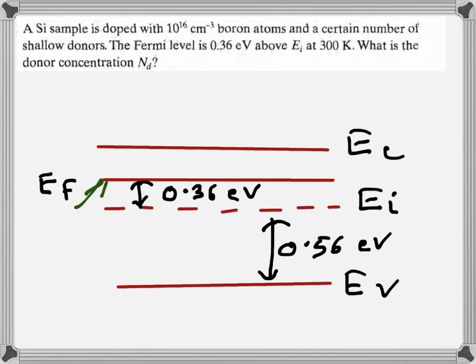Since the Fermi level is above the mid band gap or the intrinsic Fermi level, it means that it is an n-type device and the temperature is at 300 Kelvin. So we need to find the donor concentration. We can assume full ionization, so n is approximately equal to Nd.